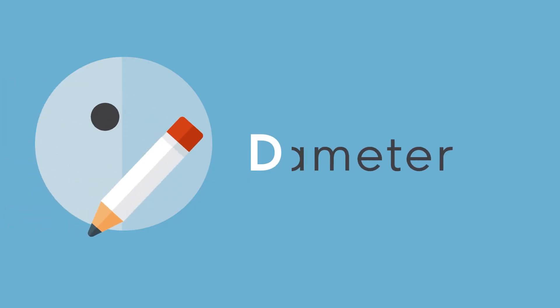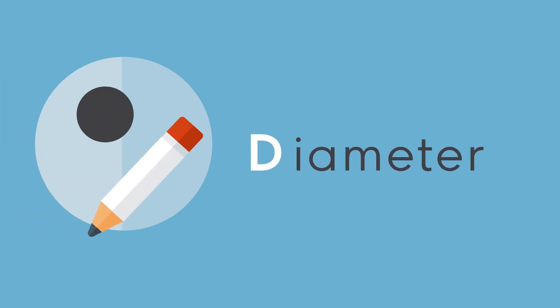D stands for diameter. Obviously all lesions, even if they're nasty ones, start off small — but generally the larger it is, the more at risk it is. Anything over six millimetres should be further investigated.